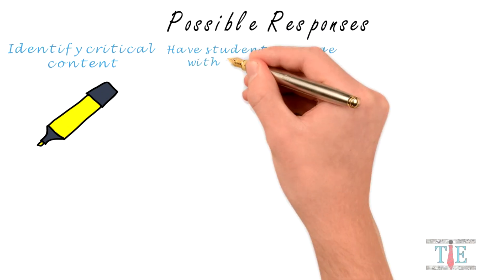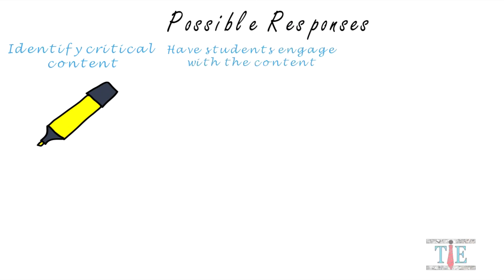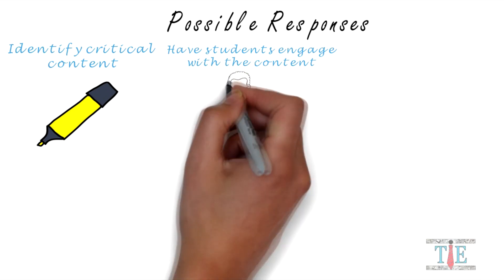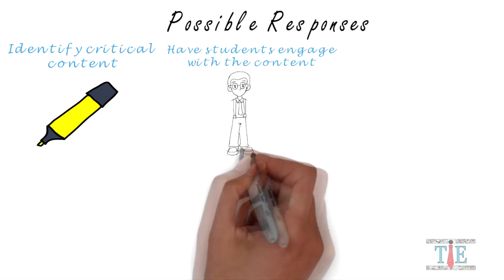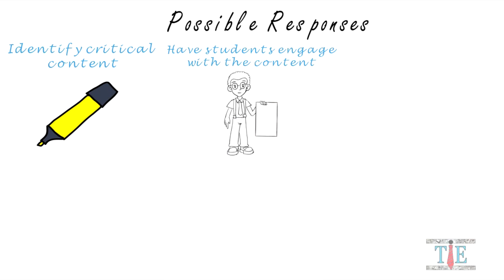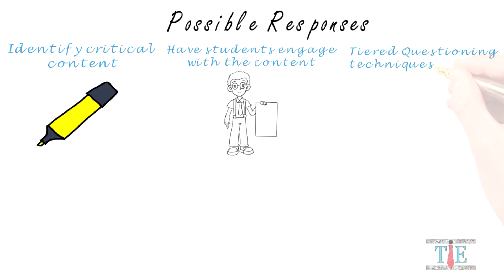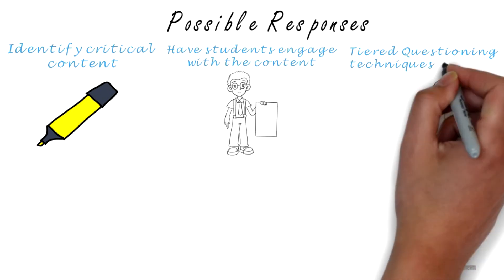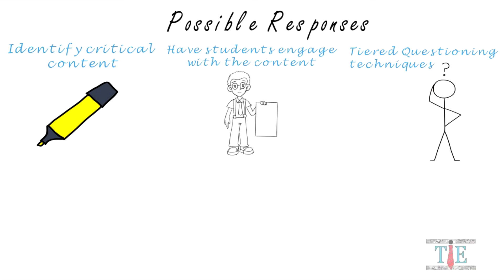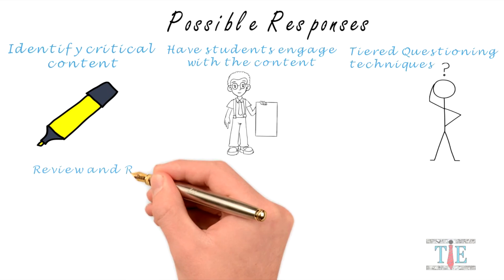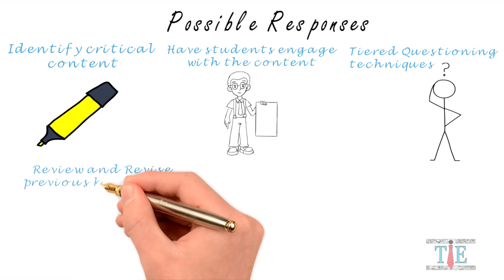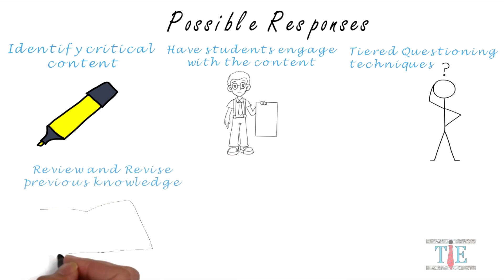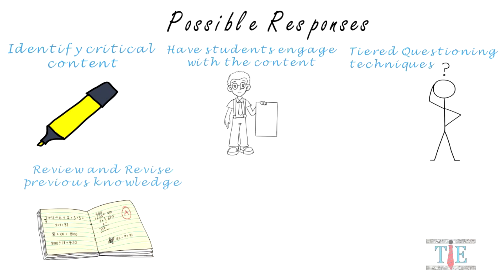Second, have students engage with the content. A lecture-driven, teacher-centered classroom is out of date — learning should be student-centered and allow students to learn the content in different ways. Third, use tiered questioning techniques for instruction and assessment. Begin by questioning students through simple knowledge and build up to higher order cognitive rigor questions. Number four, review and revise previous knowledge. Over time students forget things they have learned, but they need to continually brush up on what they've learned, as standardized tests are cumulative.